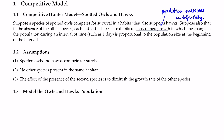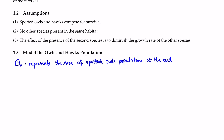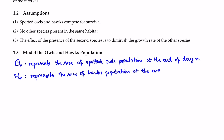I'm going to write down some notation for our model. For owls, I'll use O sub n — this represents the population of spotted owls at the end of day n. Similarly, I'll call the hawk population H sub n, which represents the hawk population at the end of day n as well.